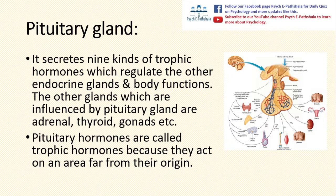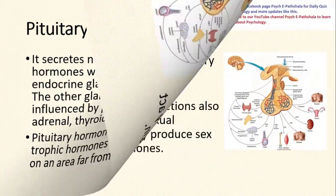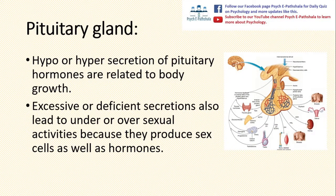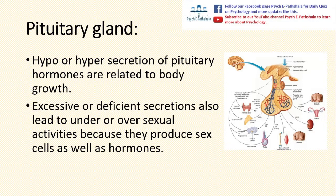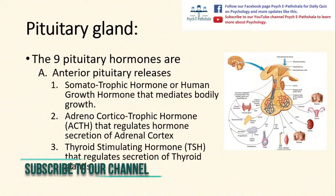The other glands influenced by the pituitary gland are adrenal, thyroid, gonads, etc. Pituitary hormones are called trophic hormones because they act on an area far from their origin. The hypo or hyper secretion of pituitary hormones is related to bodily growth. Excessive or deficient secretion also leads to under or over sexual activities because they produce sex cells as well as hormones. In total, the pituitary releases nine hormones.